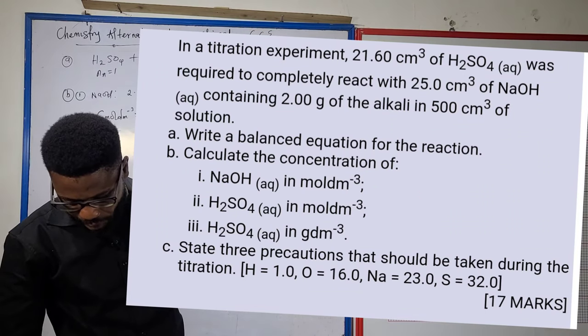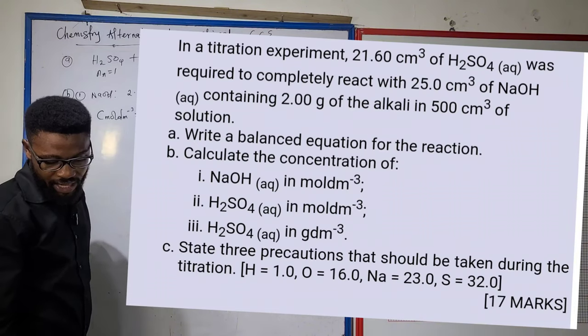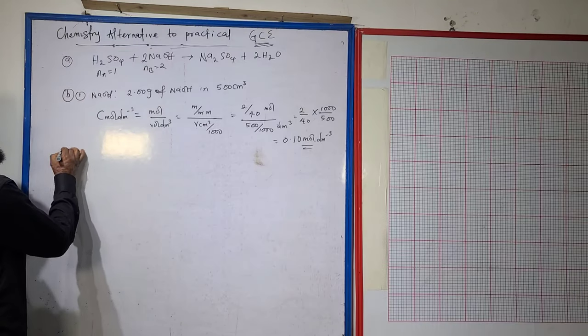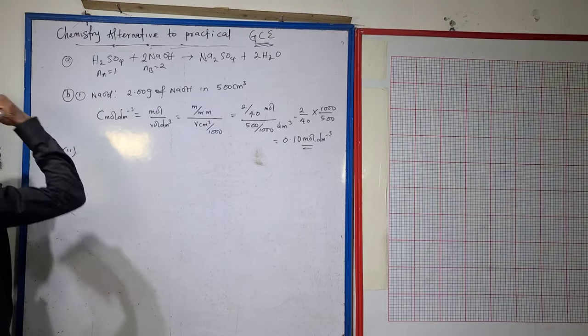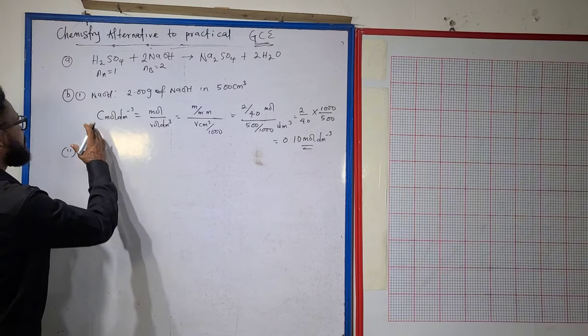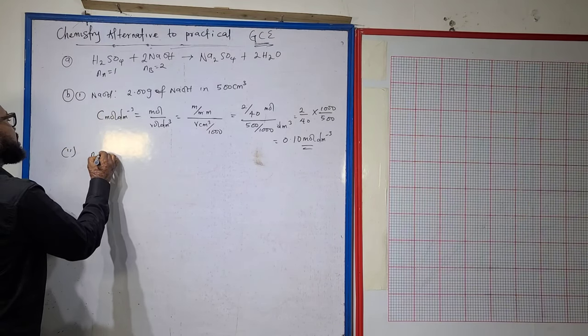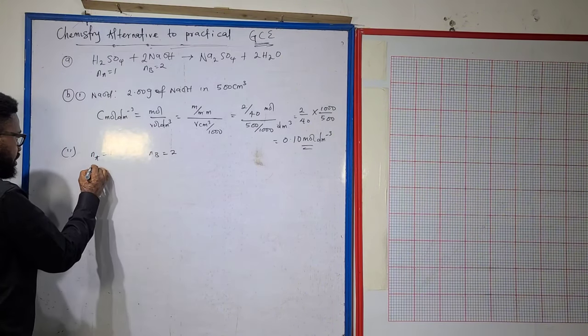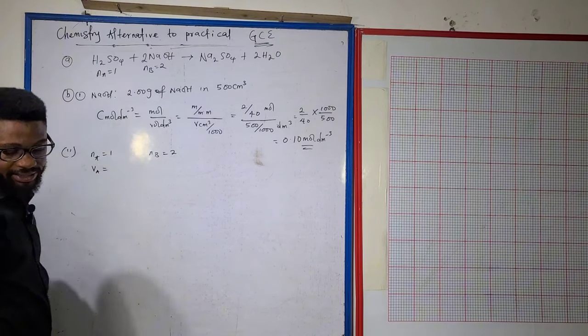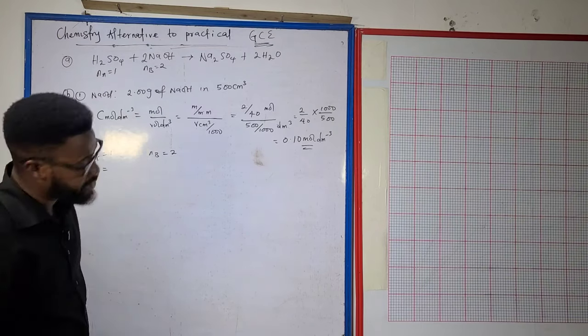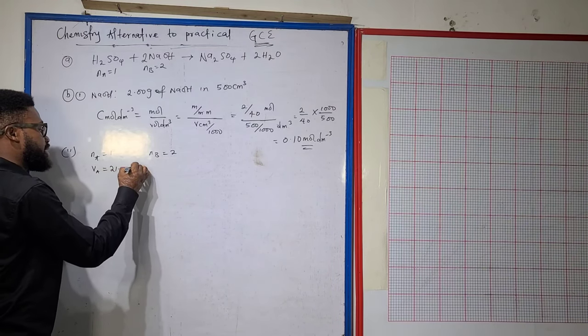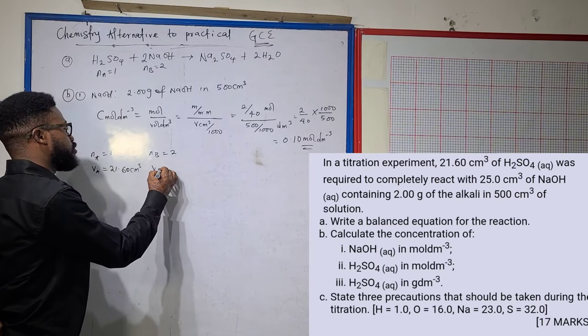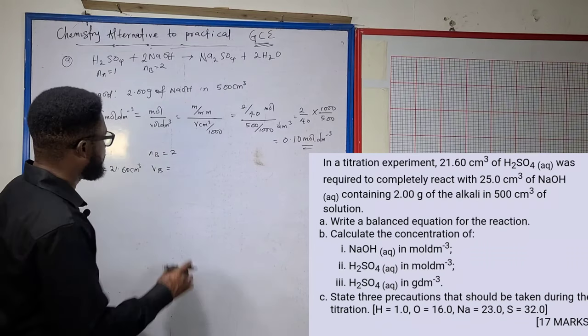For b2, calculating the concentration of H₂SO₄ in moles per dm³, I wasn't really given much data about sulfuric acid, so I revert to the usual formula. Na equals 1, Nb equals 2, Va, the volume of acid able to neutralize the base, is 21.60 cm³, and Vb is 25 cm³.